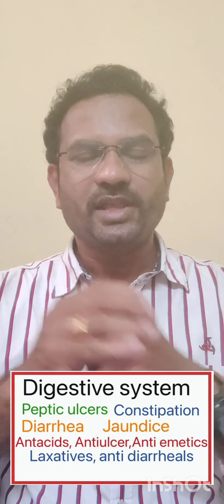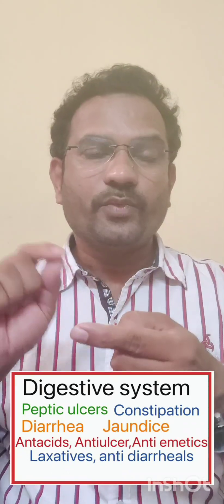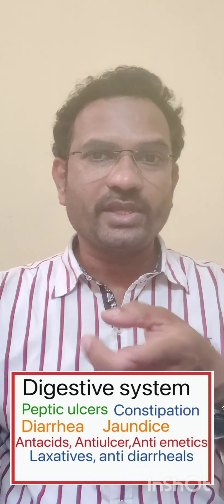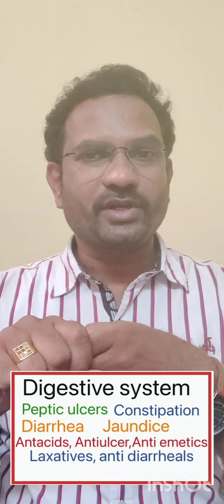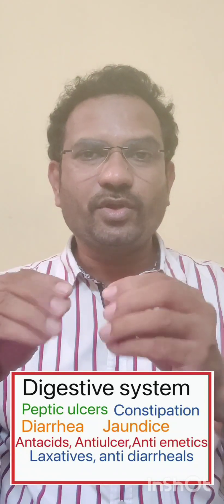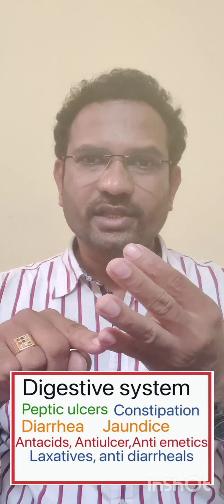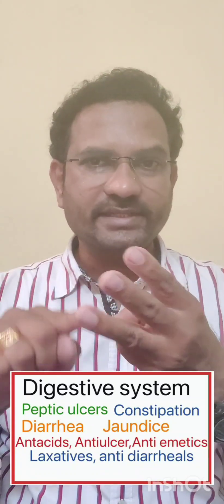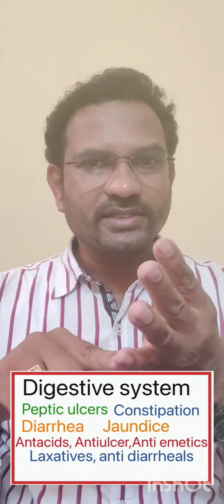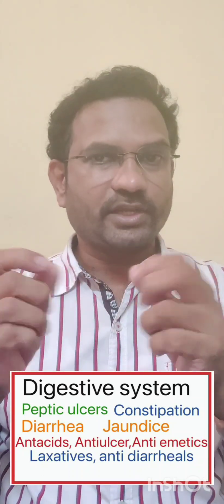After cardiovascular, you have the digestive system. In digestive system physiology, you need to understand which cells secrete HCL and from where the stomach gets mucus — all these things are important. Related to disorders, you need to know about peptic ulcers, constipation, diarrhea, and jaundice. Similarly for drugs: anti-ulcer drugs, antacids, laxatives, anti-diarrheal agents, and probiotics — you need to take note of all of these.